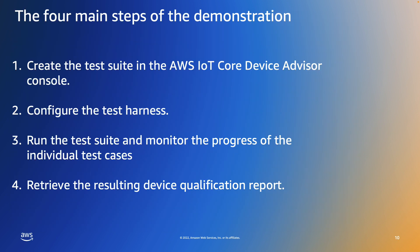There are four main steps in the demonstration. First, we will create the test suite in the AWS IoT Core Device Advisor console — this could also be done using the API, but in this demonstration we'll use the console. Secondly, we'll configure the test harness in the Python code. Third, we'll run the test suite and monitor the progress of the individual test cases, again using the Python code. And finally, we'll retrieve the resulting device qualification report, again using the Python APIs.